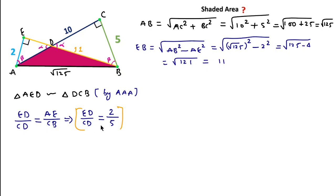Now if we consider the area of triangle AED as P square units, the area of the middle region as Q square units, and the area of triangle DCB as R square units, we can set up equations using these areas.